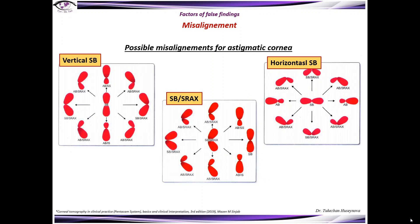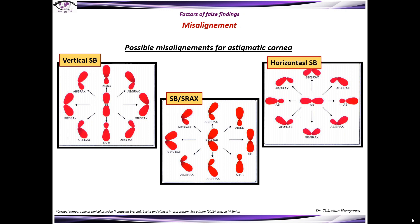In this slide you can see possible misalignment for astigmatic cornea with vertical symmetric bow tie, astigmatic cornea with symmetric bow tie and skewed radial axis, and horizontal symmetric bow tie.